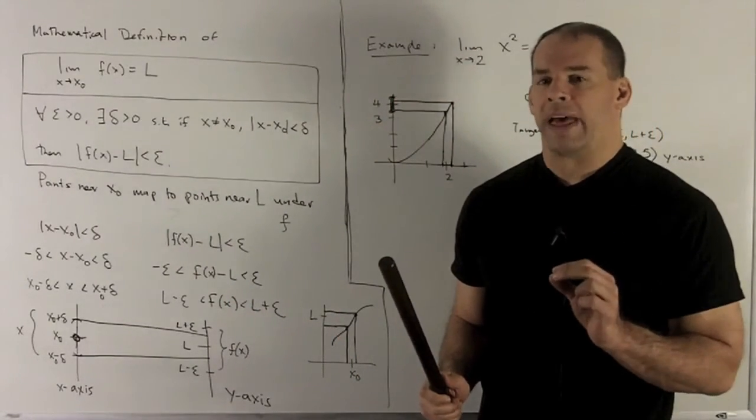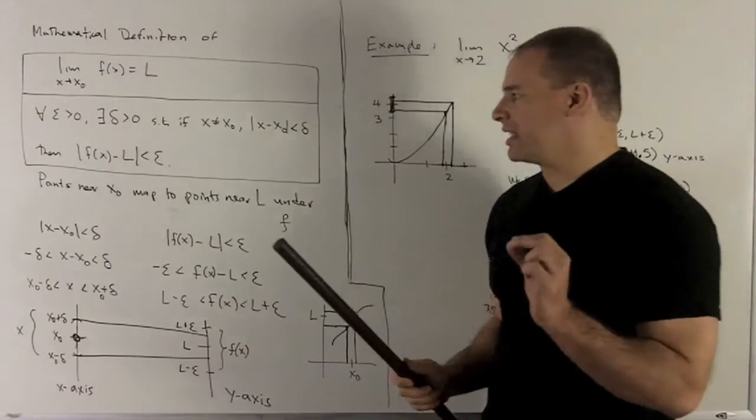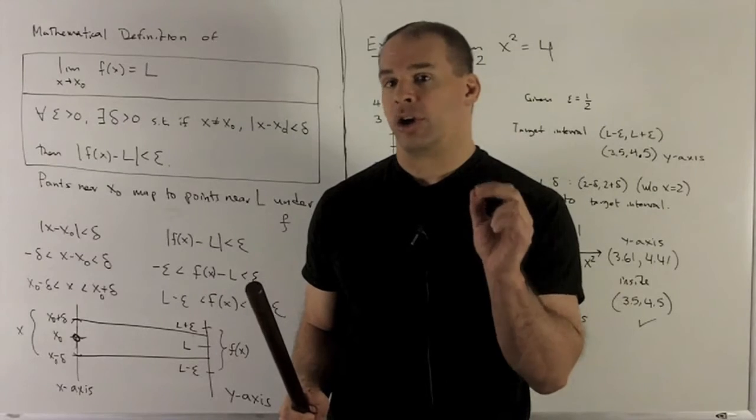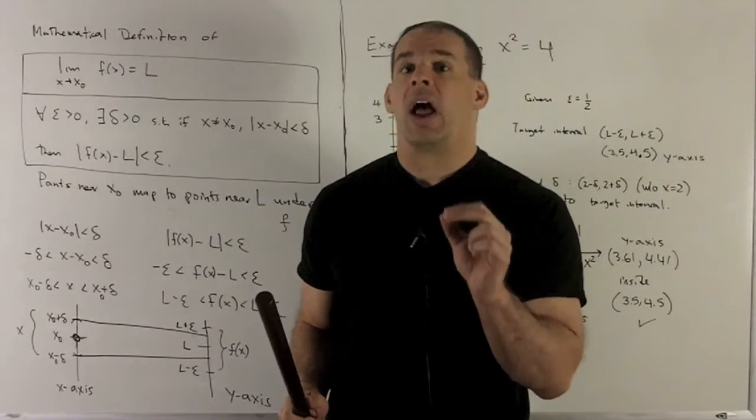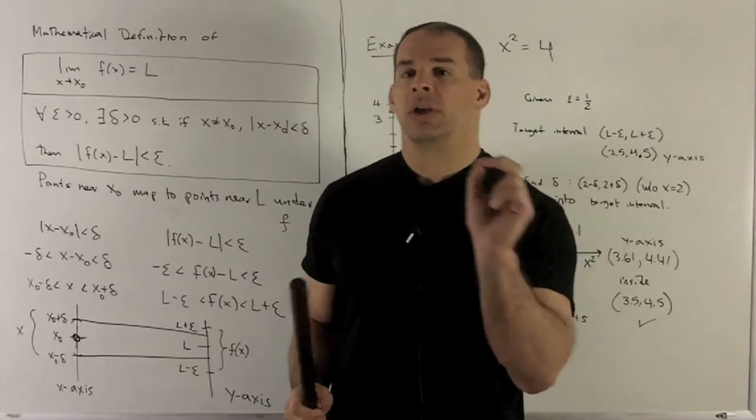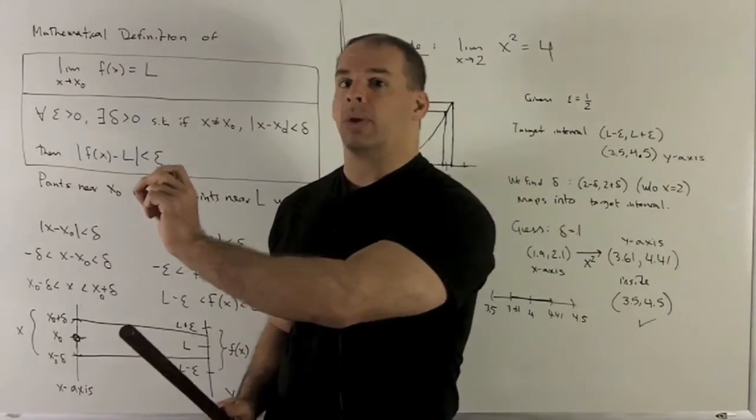We'll pull that apart in a second, but what this really says is points near x0 are going to map under f to points near L. That's all we're doing with a limit. It's just this idea of starting out close, when you hit it with f, you wind up close.